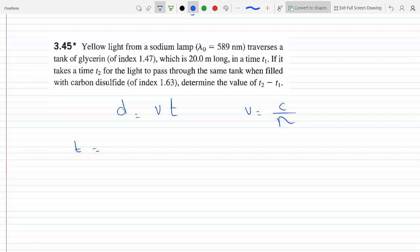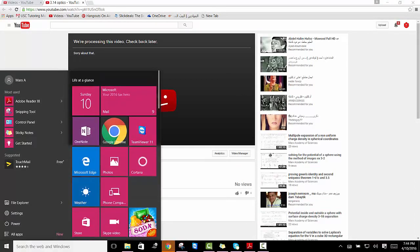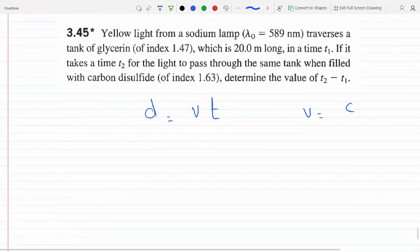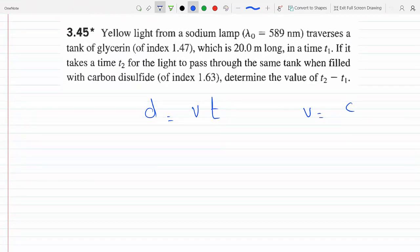So t1 is d, which is 20 meters. Now we are considering the glycerine: 20 over c over n, which is for glycerine 1.47. So it's 20 times 1.47 over c. And then t2 is...